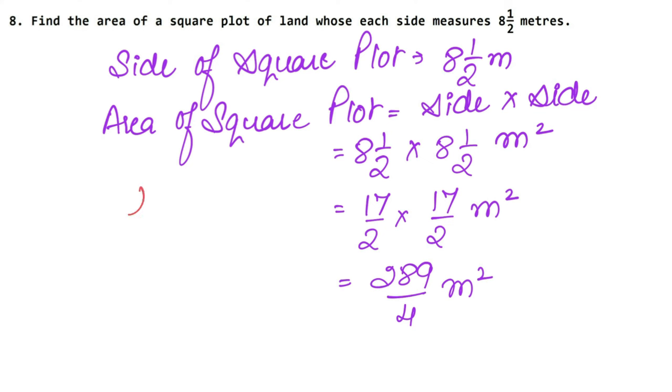We will change it in mixed fraction. So how much is it? We will divide 289 by 4. So see 4 sevens is 28, 9, 4 twos is 8, 9, 1. So how can we write it? So it will come 72 whole, 1 will come up, and 4 will come down. So this means how much is our square plot area? 72 whole 1 upon 4 meter square is the answer. Let's do next question now.